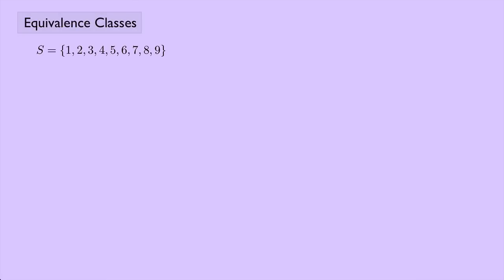Suppose we have a set S which consists of the integers 1 through 9, and we define an equivalence relation: x is equivalent to y if and only if x minus y is divisible by 3, for any elements x and y in the set S.